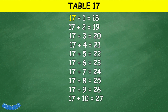Table 17: 17 plus 1 equals 18, 17 plus 2 equals 19, 17 plus 3 equals 20, 17 plus 4 equals 21, 17 plus 5 equals 22, 17 plus 6 equals 23, 17 plus 7 equals 24, 17 plus 8 equals 25, 17 plus 9 equals 26, 17 plus 10 equals 27.